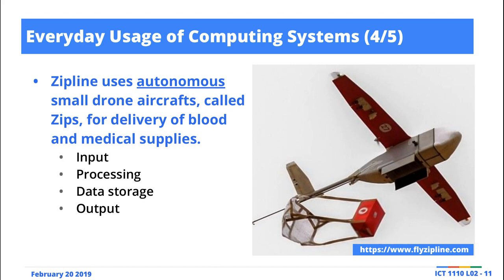Pay particular attention to things like the input, what sort of processing takes place, where data is stored, and the type of output produced. I have a question: what do you think is the output when this autonomous drone delivers to a remote health facility in, say, Kanyama? They receive the input, then send the autonomous drone — what is the output and where is it sent?